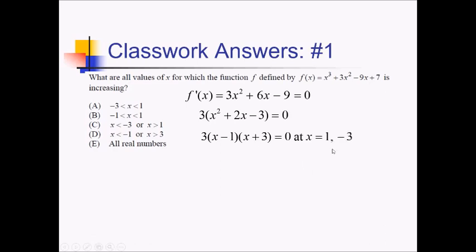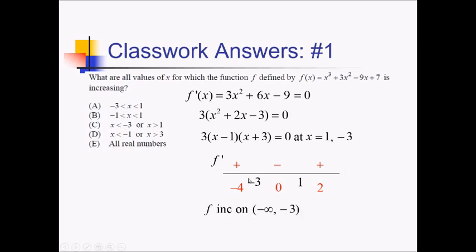Those are our two critical values that we're now going to do a little sign analysis around. Here's my f' number line. I've got negative 3 and 1. Testing negative 4 gives us a negative times a negative, so positive. 0 gives us a negative times a positive, which is negative. And 2 gives us positive times positive, so positive overall. We wanted increasing intervals, so that's wherever f' is positive: from negative infinity to negative 3, and also from 1 to positive infinity. This is equivalent to x less than negative 3 or greater than 1, so that's choice C.